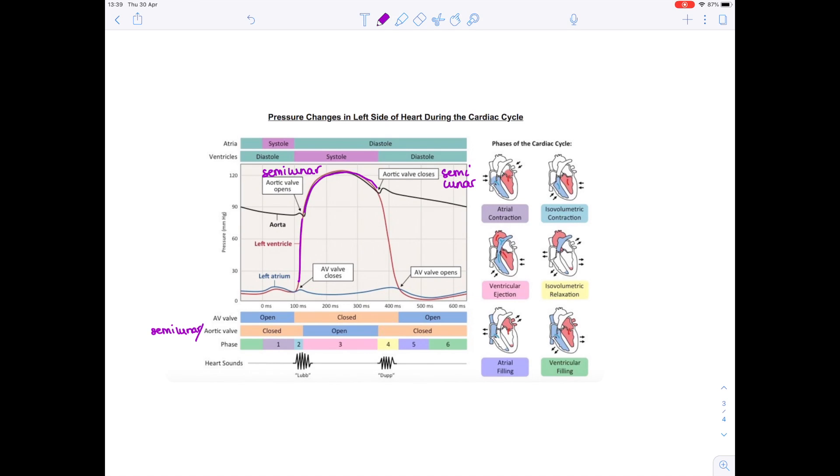Then what happens is the aortic valve or the semilunar valve closes. And so pressure in the left ventricle is going to decrease. Why? Because there's no blood in it. And then actually the cardiac cycle is going to start again because you need the atria to then start filling with blood. Hence the atrial pressure starts increasing.